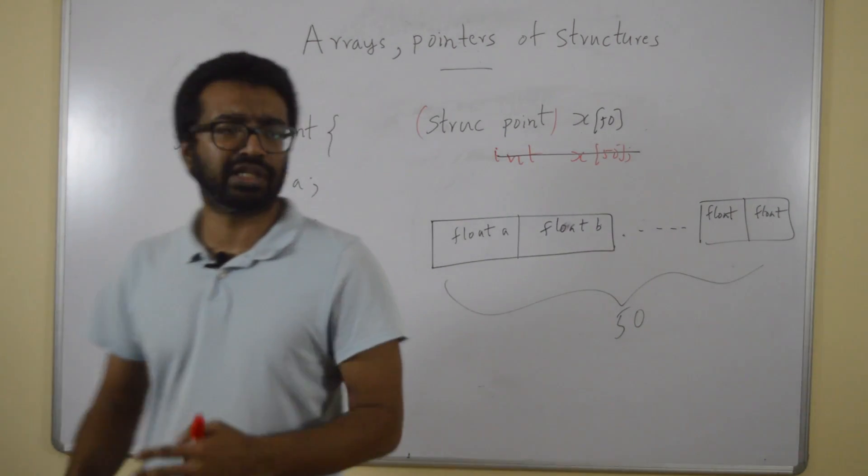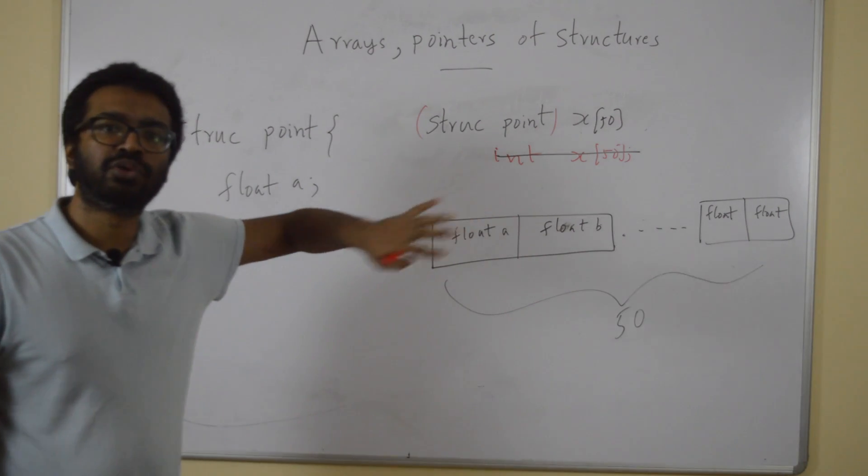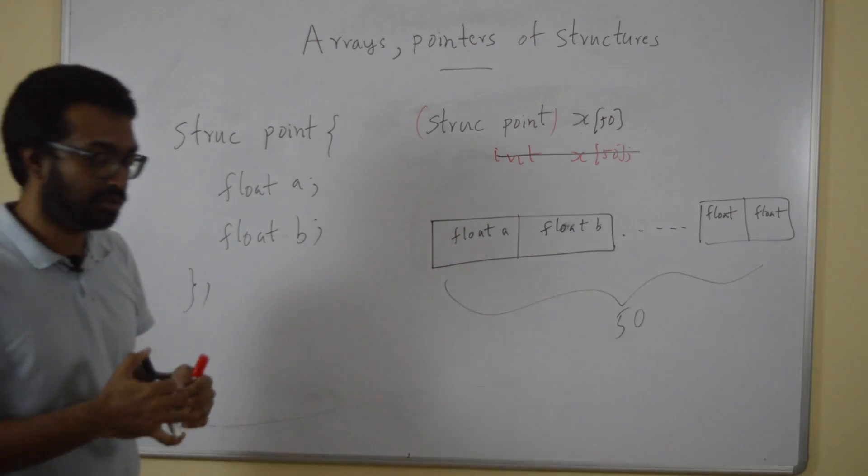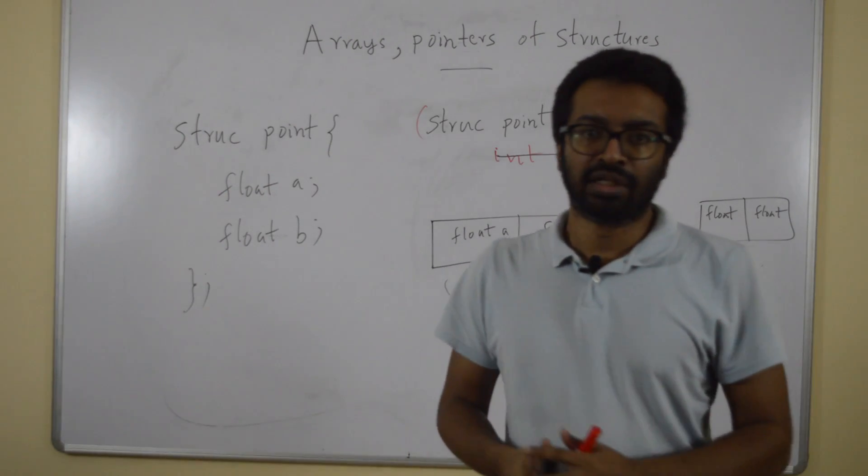Now, the next thing is that, this is a static way to allocate memory, allocate 50 arrays. The next question is, what if I want to allocate this dynamically?